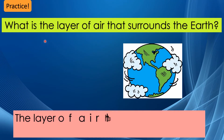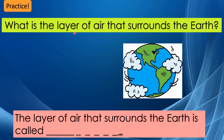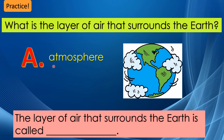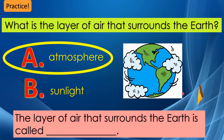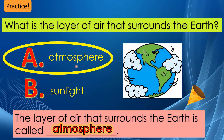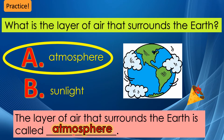What is the layer of air that surrounds the earth? Let's choose. A. Atmosphere. B. Sunlight. The correct answer is atmosphere. Let's read the whole answer: The layer of air that surrounds the earth is called atmosphere.